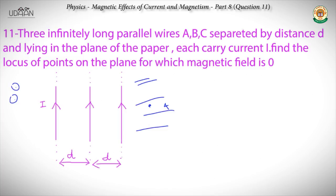On the other side of the arrangement, the magnetic field will be out of the plane for all three wires. So basically it cannot be zero out here either. On one side the summation adds up to field into the plane, and on the other side it adds up to field out of the plane. So the chances of finding points where the field becomes zero has to lie between these wires.